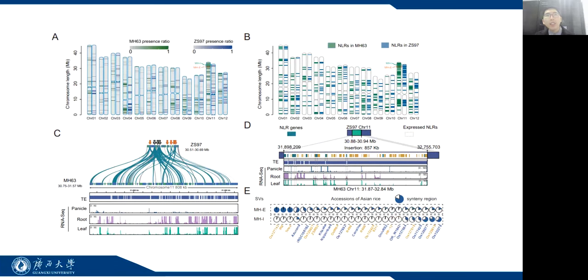After comparing the distribution of presence-absence variation on each chromosome of the two gap-free assemblies, we noticed a large amount of structural variation near the end of the long arm of chromosome 11. Two large structural variations, an expansion region MHE and an insertion region MHI, were uniquely detected in Minghui.